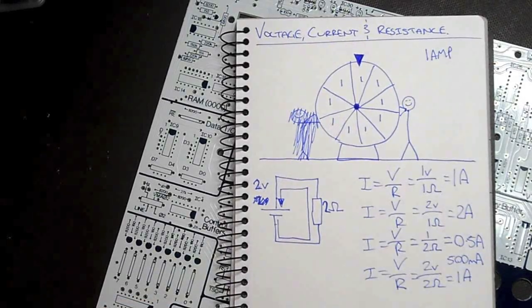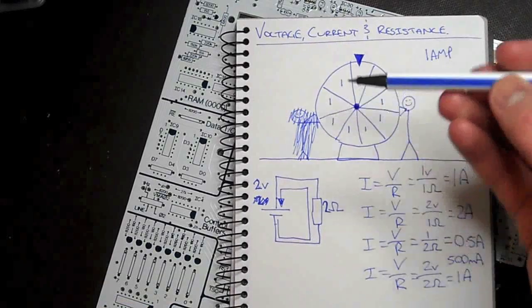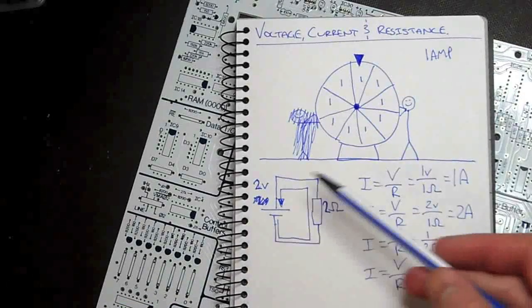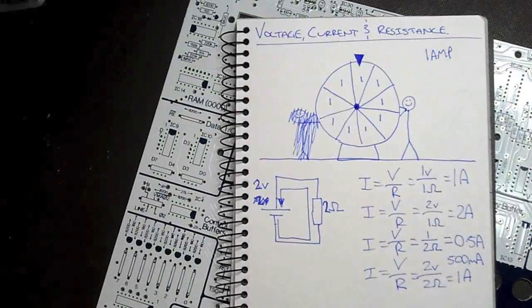So that's my little analogy on how voltage, current, and resistance come into play in our electronic circuits.